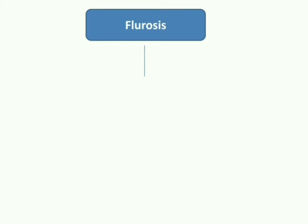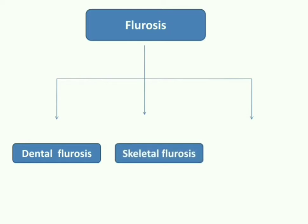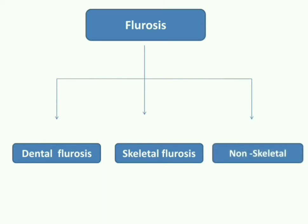Classification of fluorosis — how is it classified? Fluorosis is of 3 types. The first is dental fluorosis, which affects the teeth. The second is skeletal fluorosis, which affects the skeleton. And the third is non-skeletal fluorosis. Now we will study each of them.